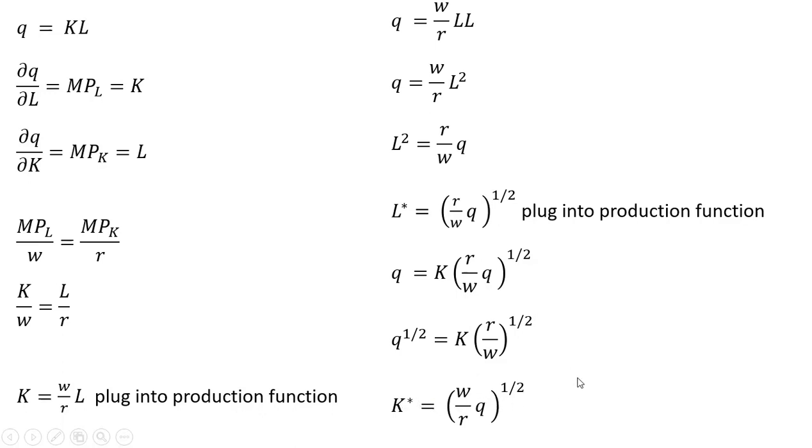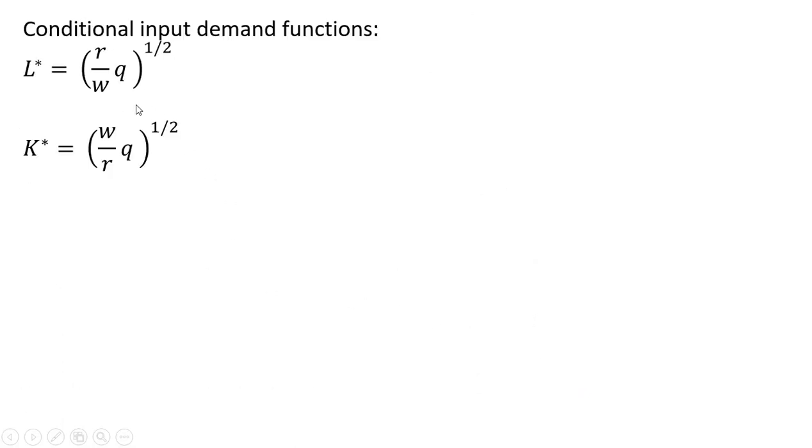OK, moving on to the next slide. What we really found here, our names for what we found, the L star and K star, sometimes are referred to as conditional input demand equations or functions. The optimal level of labor here is conditional on the quantity of output. And likewise, the demand for optimal level of capital here depends on the quantity of output as well.